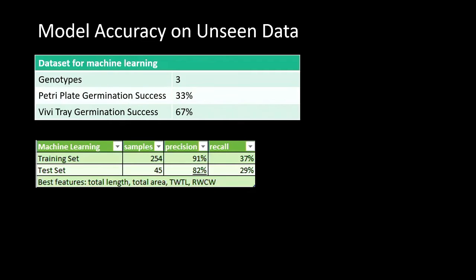This is the model accuracy from a decision tree. In the experiment, only 33% germinated on the petri plate and 67% on BV trays. But once we trained the model, we could get 91% precision on the training data and 82% on the testing data. This means the AI will select a certain amount to germinate and 82% of those will germinate, which is much better than just guessing. The best features computed were total length, total area, the total width to total length ratio, and the root width to cotyledon width ratio.